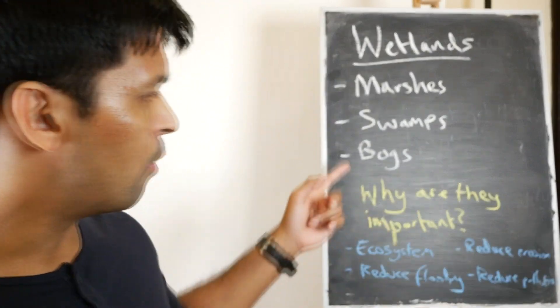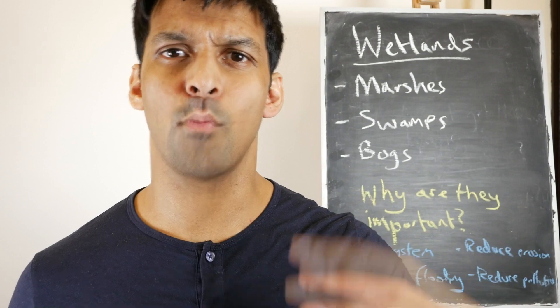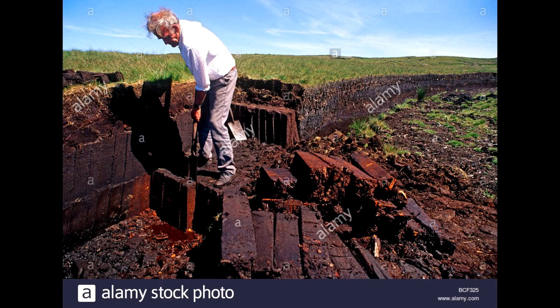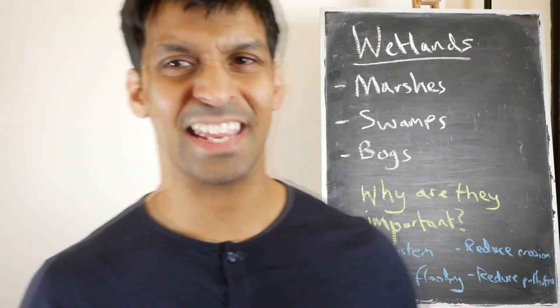Bogs form in cool, wet climates and they're formed by rainwater — not surface water runoff, just rainwater. They form a substance called peat, which is the decayed remains of sphagnum moss. The way to think of a bog is that it used to be a lake, and then it had all this moss that died and decayed, becoming meters and meters thick.